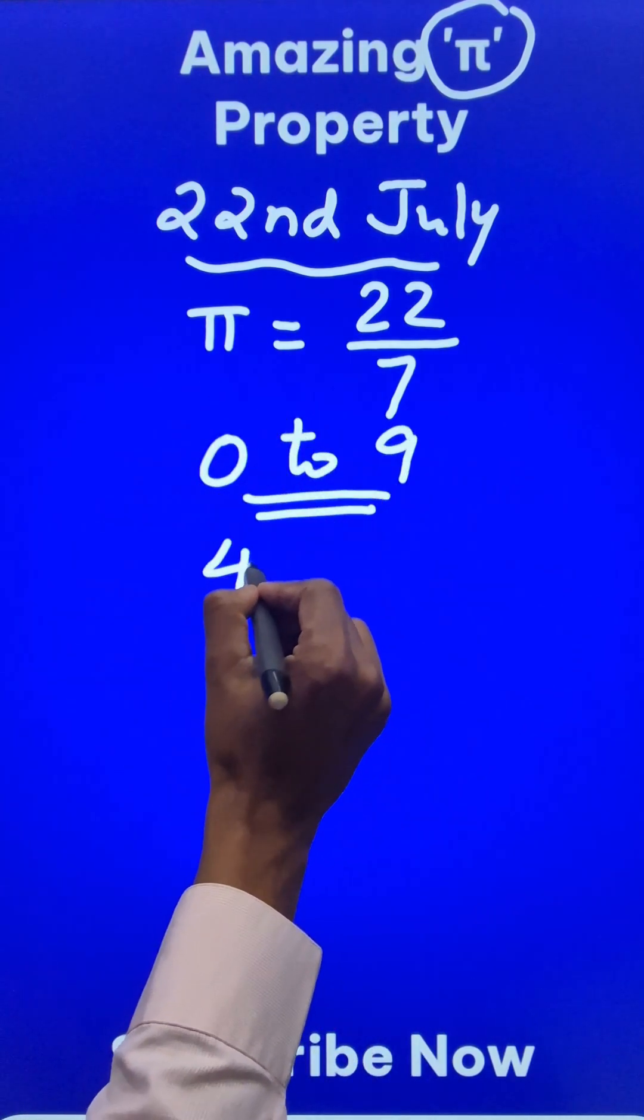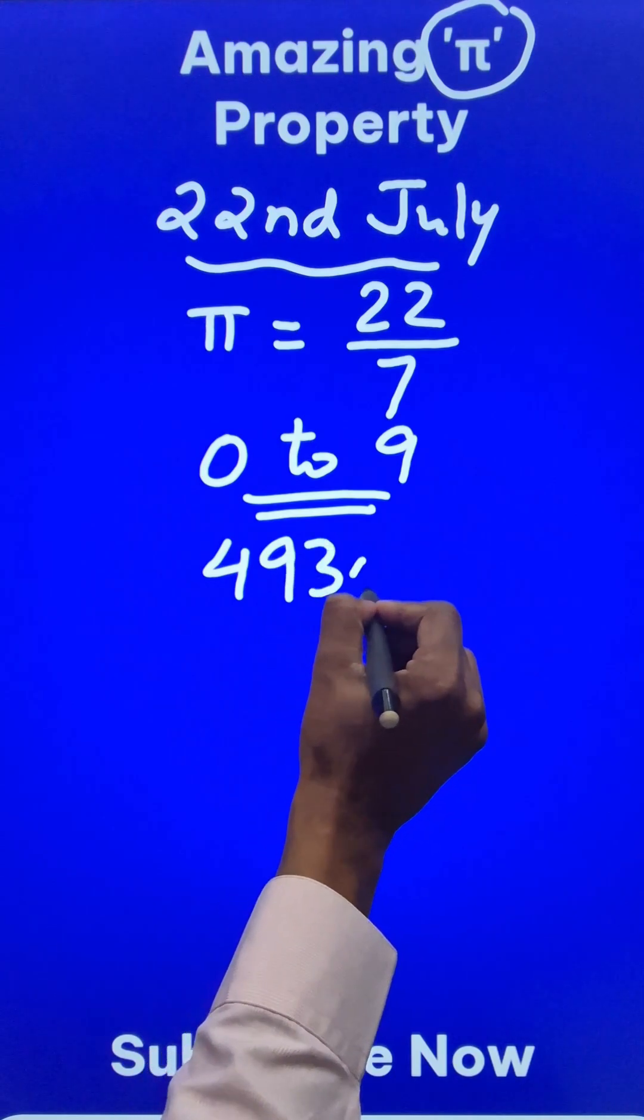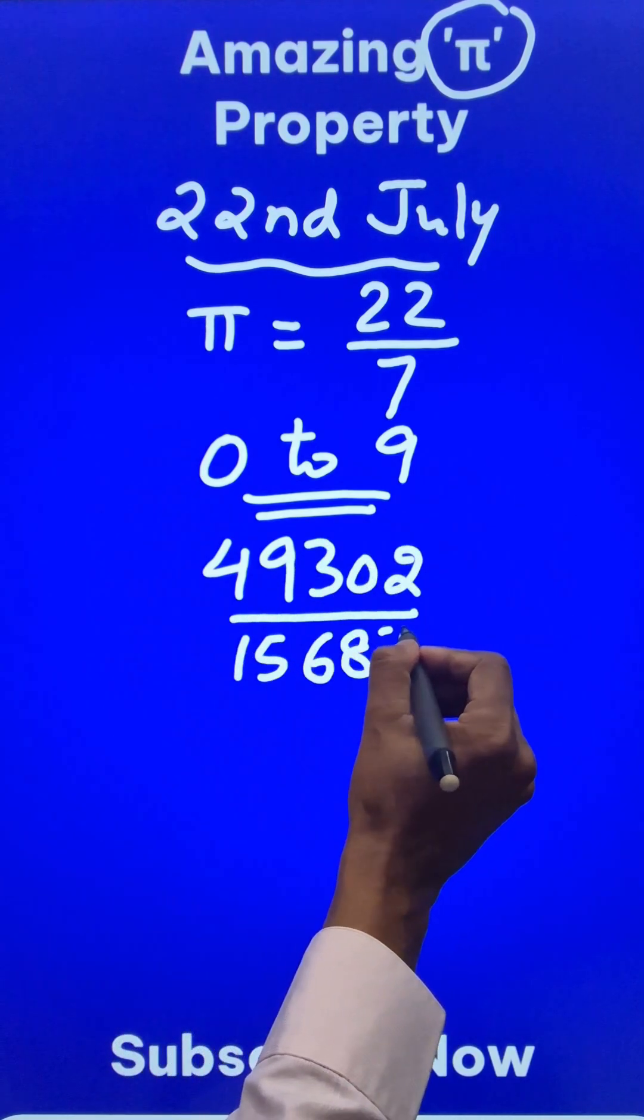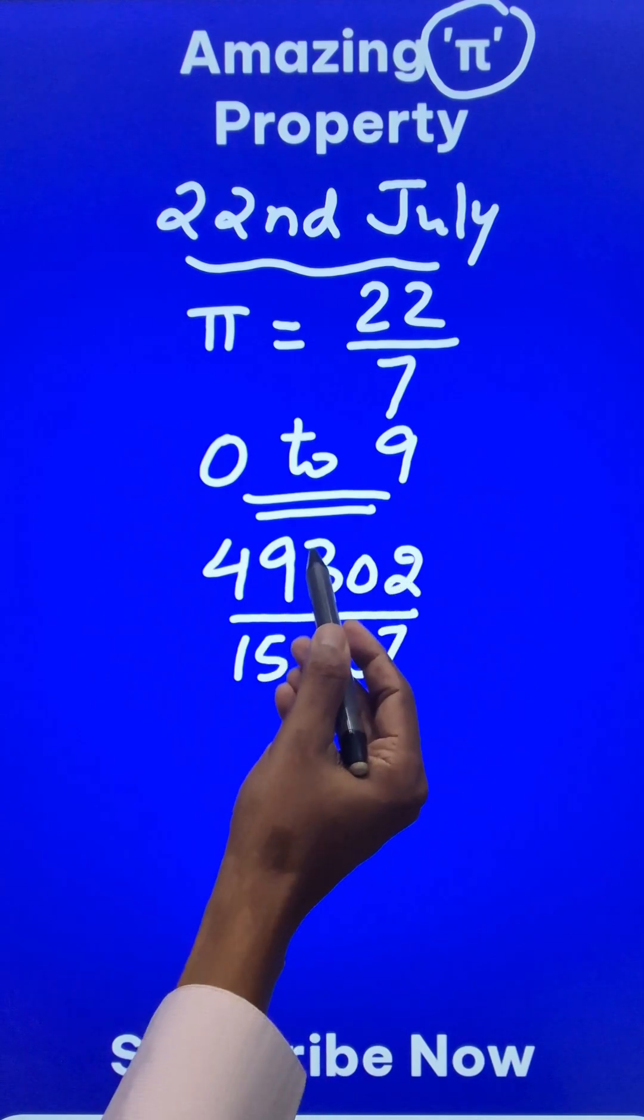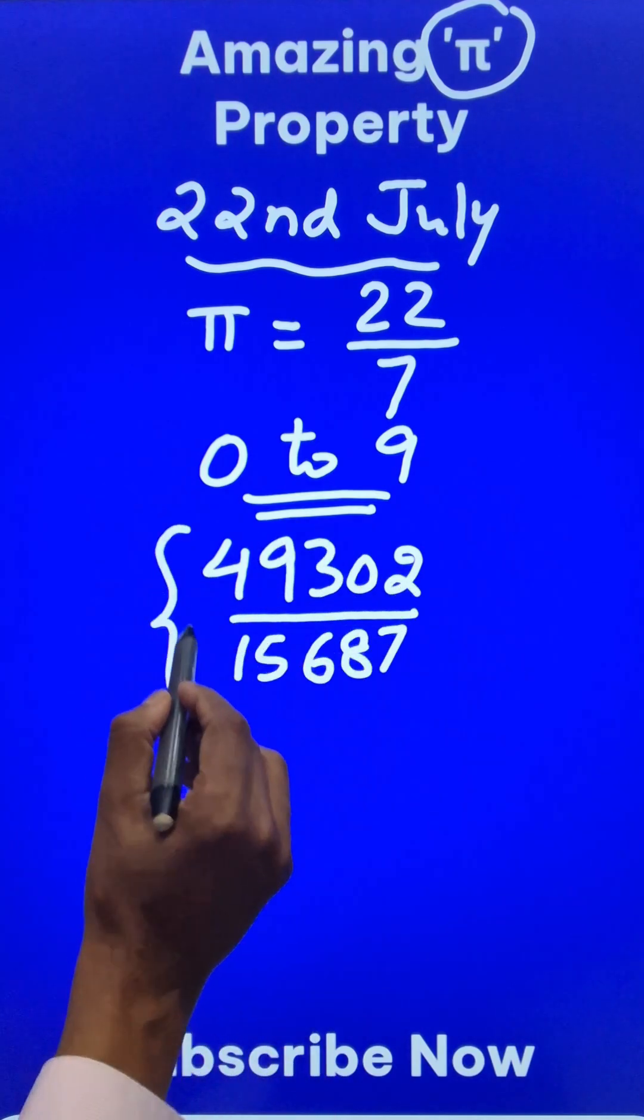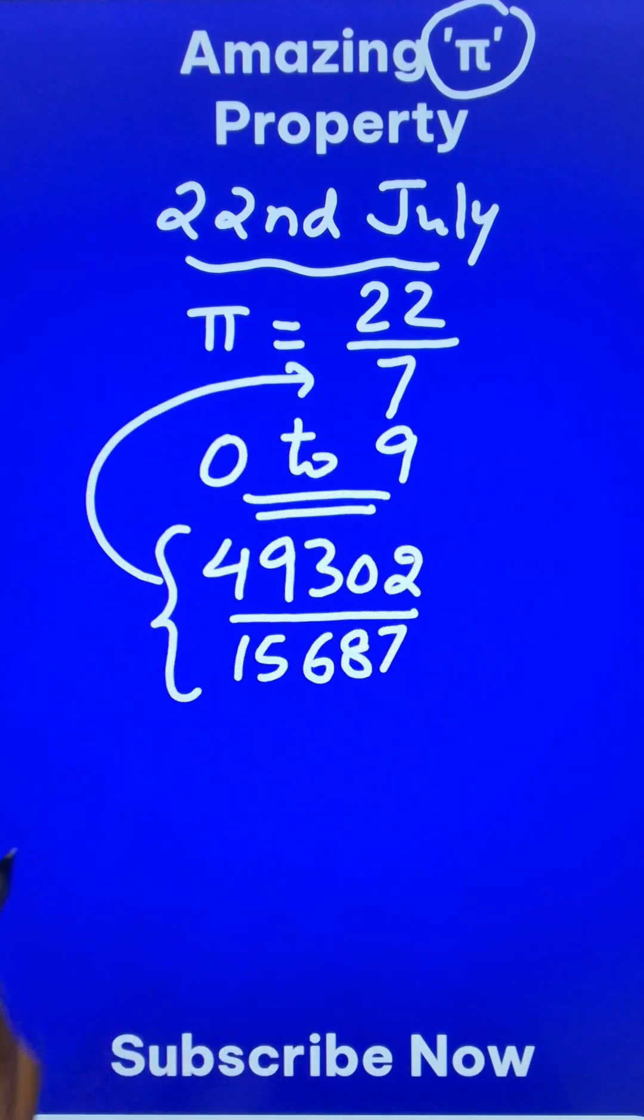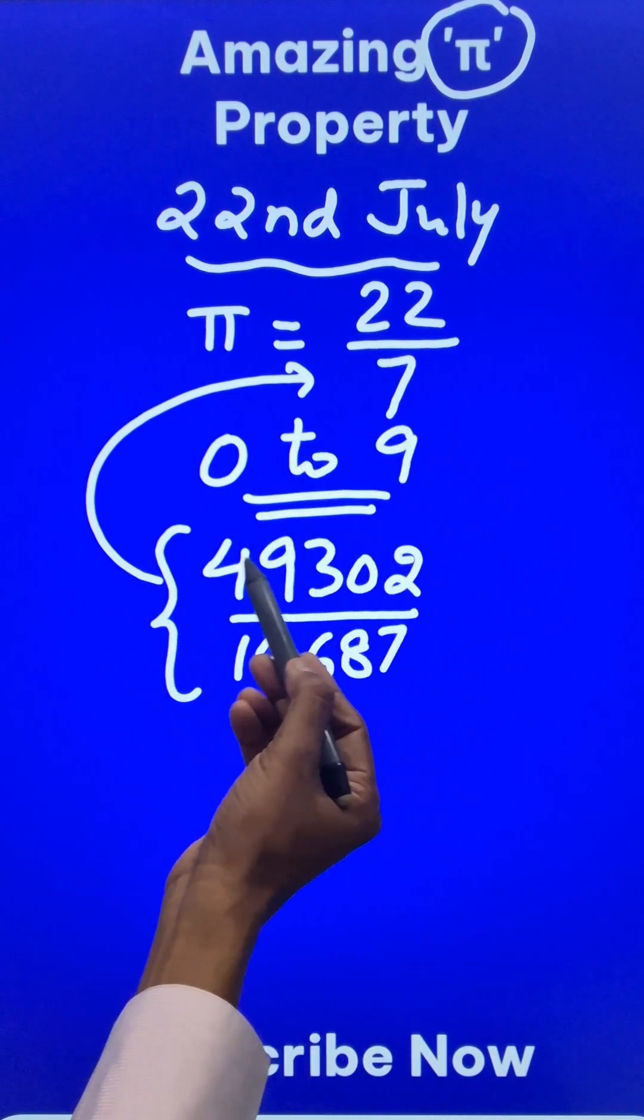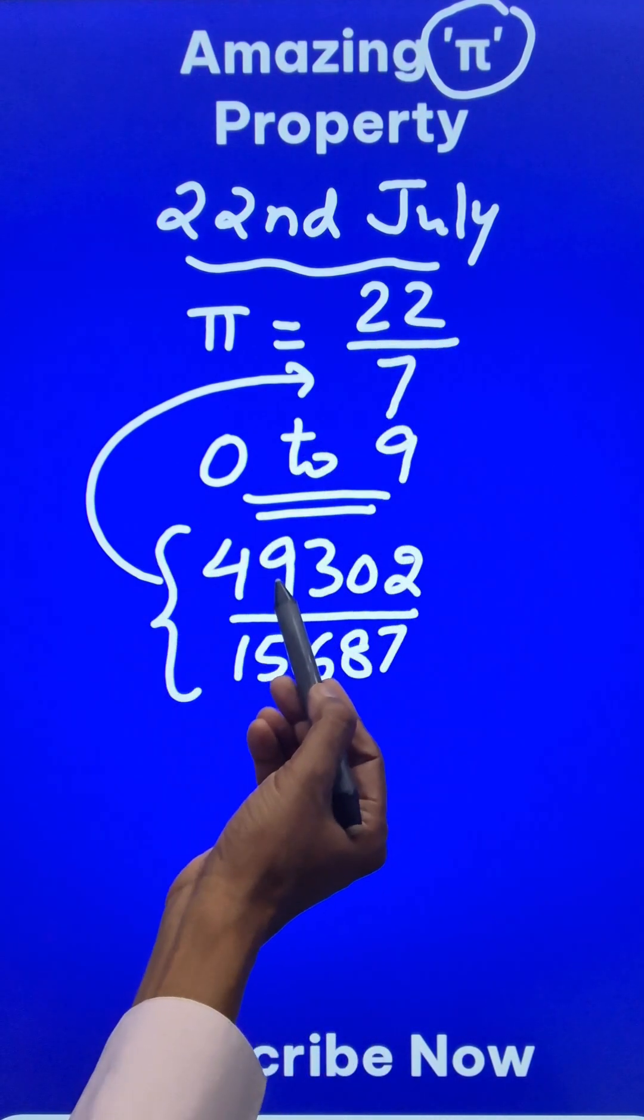Suppose I have a number like 49302 in the numerator and 15687 in the denominator. If you reduce it to the lowest form, you will be surprised to know that this will reduce to exactly 22 upon 7 which is the value of pi and all the digits here are different: 0, 1, 2, 3, 4, 5, 6, 7, 8 and 9.